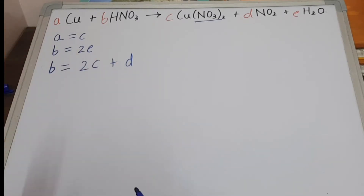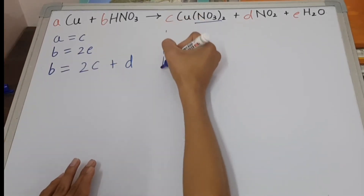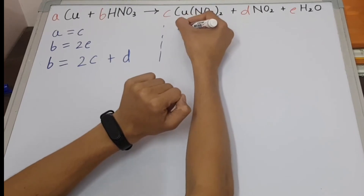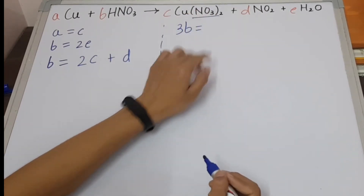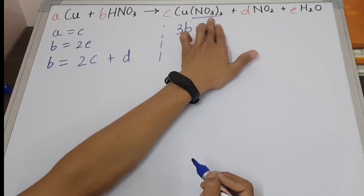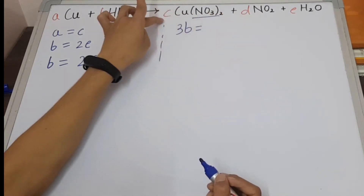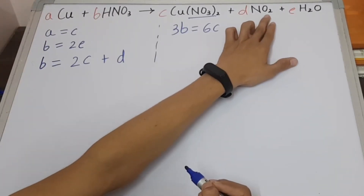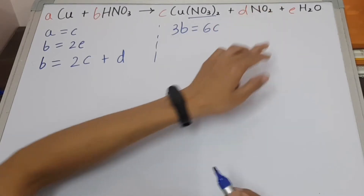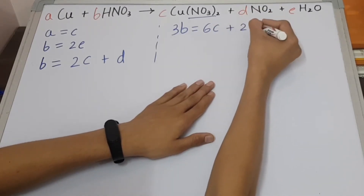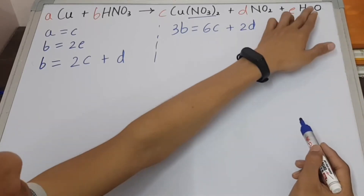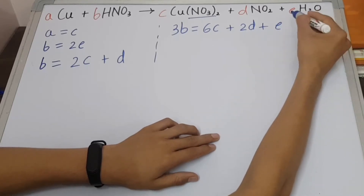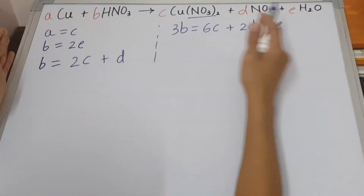So we have these 3 equations. One more is left — oxygen. We have 3 oxygen, B is the coefficient, so 3 times B. Now that equals: 6 oxygen from NO3 whole twice with coefficient C, so 6 times C. Then here we also have 2 oxygen with coefficient D, so plus 2D. And again here we have 1 oxygen with coefficient E, so plus E. So here we have 4 equations.